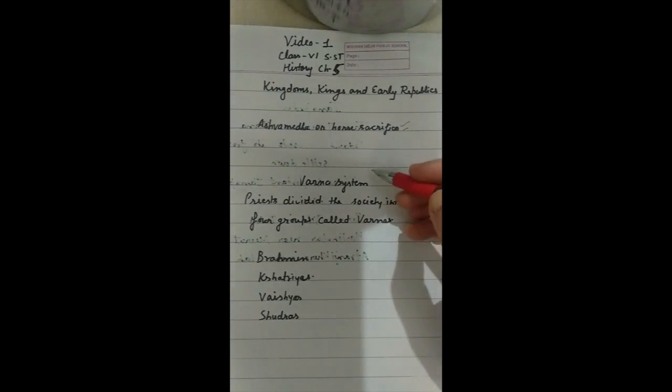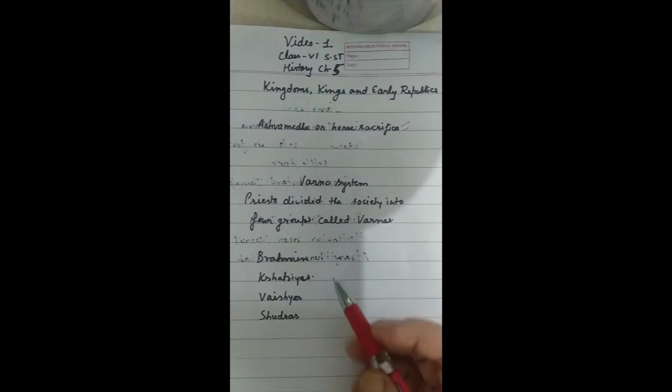During this time, Varna system was introduced by the priests. The priests divided the society into four groups called Varna system. According to this system, the Brahmans were the first in this ladder. They had to study the Vedas, perform sacrifices and receive gifts.